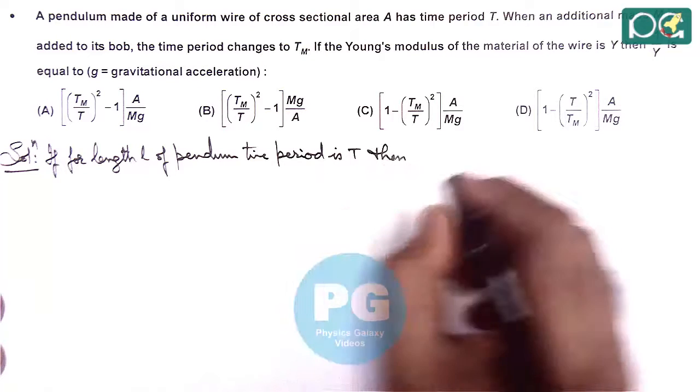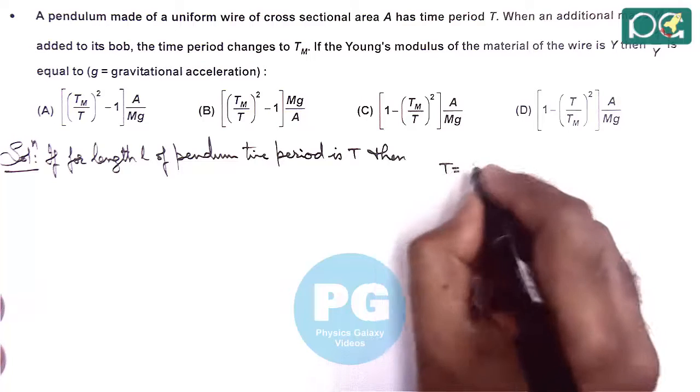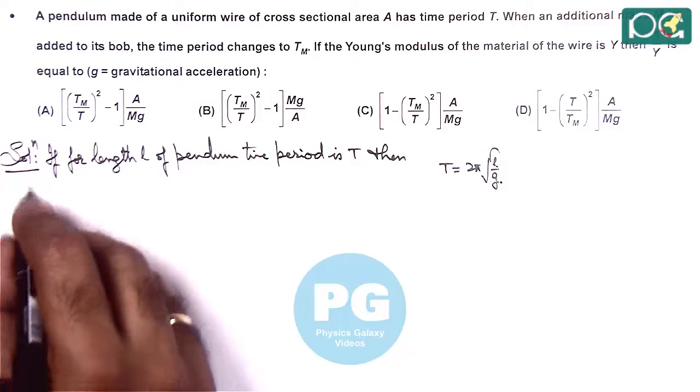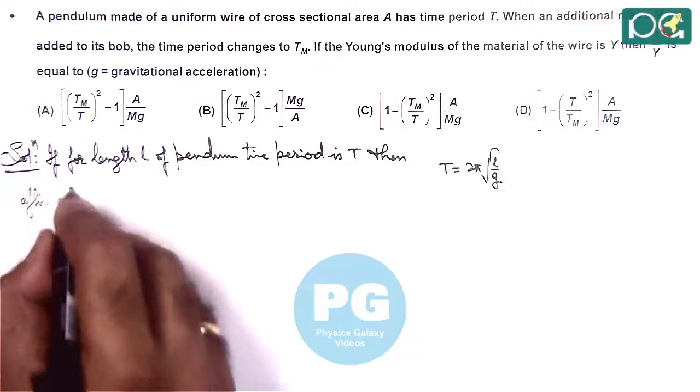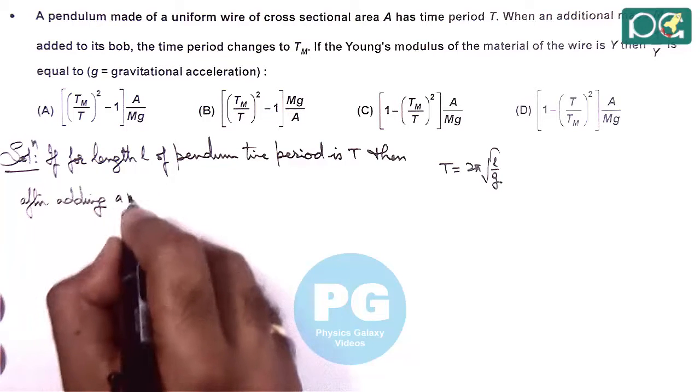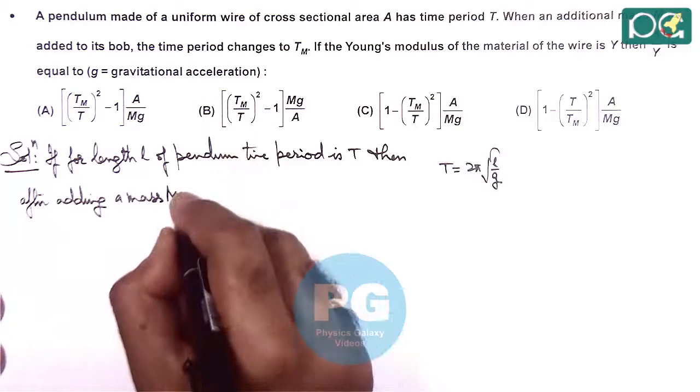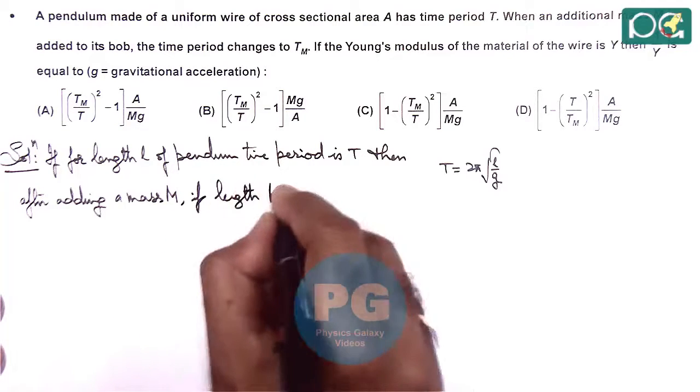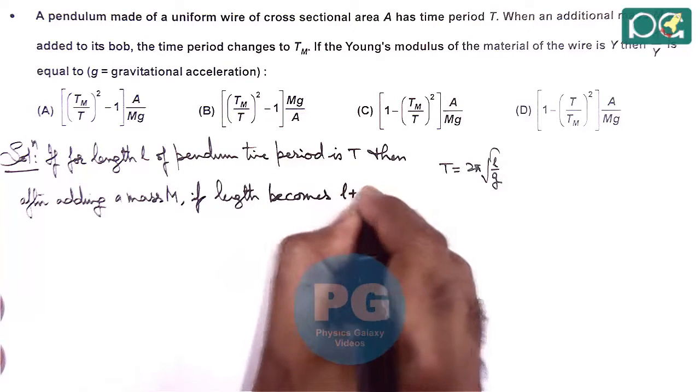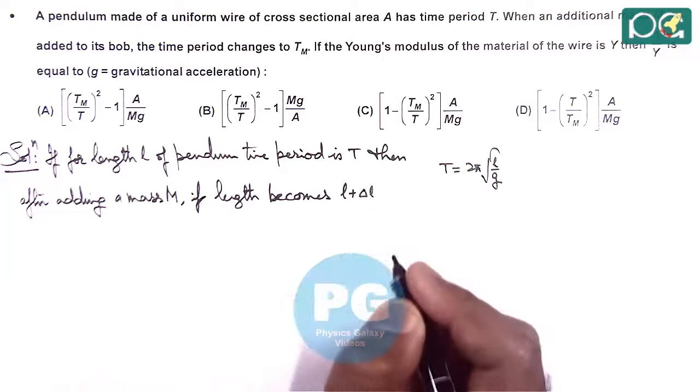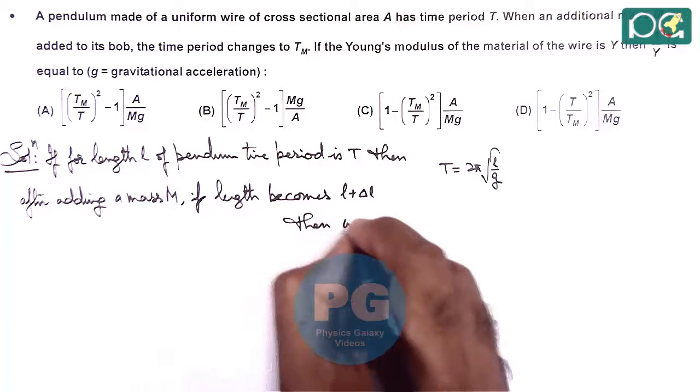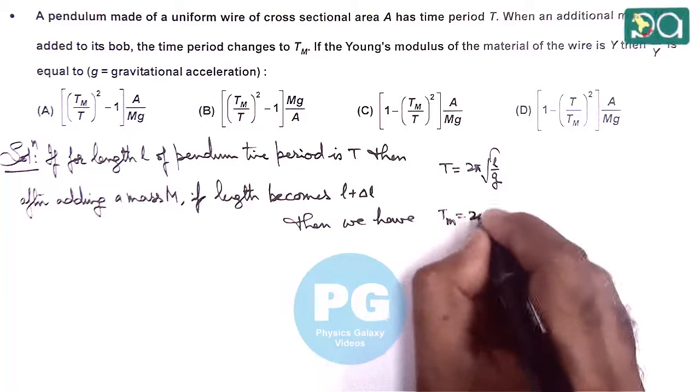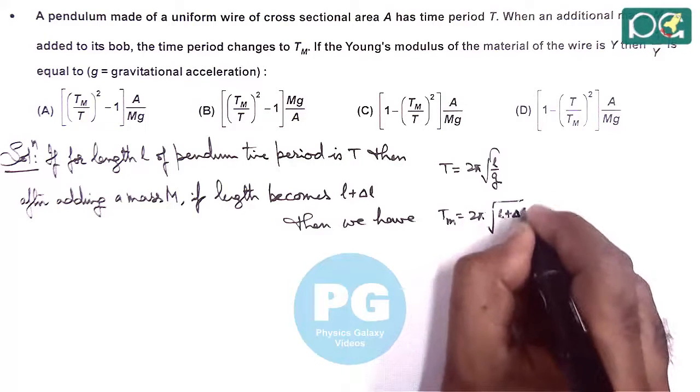Then here we have T equals 2π√(L/g). And after adding a mass M, if length becomes L plus delta L, then we have the new time period Tm, which we can write as 2π√((L + delta L)/g).